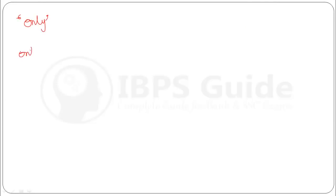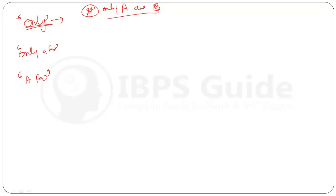First, let's revise our concept regarding 'only a few' and 'a few'. What does 'only' mean? Let's understand it with the help of a Venn diagram. If the statement says 'only A are B', that means B will share its boundary only with A. B will neither go with anyone nor can anyone share its boundary with B. So B will be inside A — neither B will share its boundary with anyone, nor anyone will share its boundary with B. This is the case of 'only'.